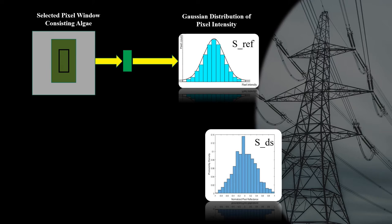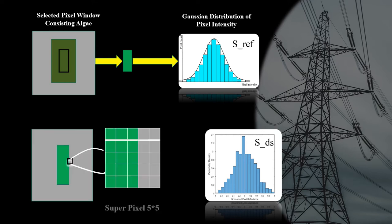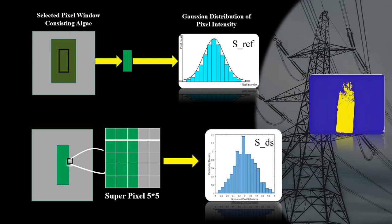To identify algae affected areas, 5x5 superpixels of image were considered. After obtaining pixel-intensity distribution for each superpixel, algae patch was identified by calculating Bhattacharya distance between reference distribution and distribution of each superpixel window.